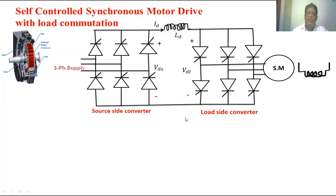The output voltage of the source side converter is VdS whereas the output voltage of the load side converter is VdL. Id is nothing but the DC link current. This is the DC link inductor, and its main purpose is to reduce the ripple in the DC current.